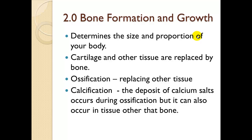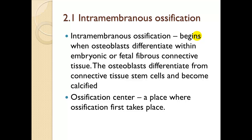Bone formation and growth determines the size and proportion of your body. Cartilage and other tissue are replaced by bone through ossification. Calcification — deposits of calcium salts — occurs during ossification, but can also occur in other tissues like cartilage, which can create problems.